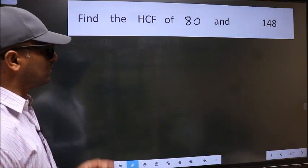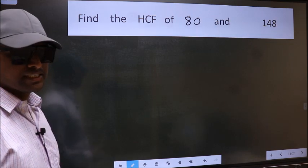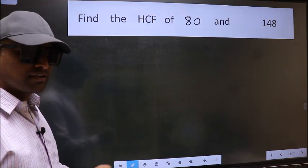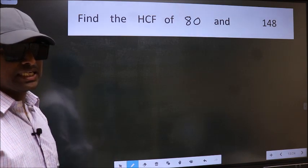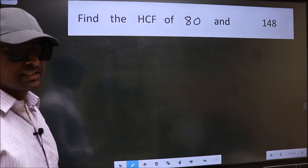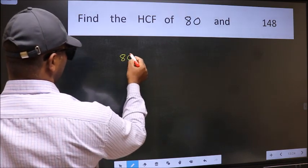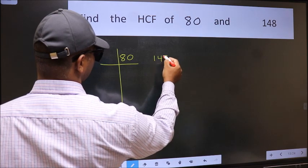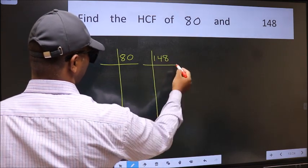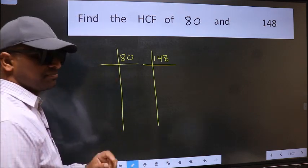Find the HCF of 80 and 148. To find the HCF, we should do the prime factorization of each number separately. What I mean is, 80 and 148. This is your step 1.